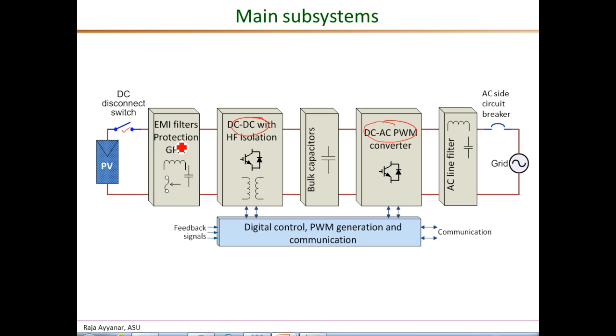That gets connected to the first stage, which is the EMI filtering and DC protection stage. The EMI filters consist of different combinations of L and C to reduce electromagnetic interference as required by standards. The protection involves fuses, reverse polarity protection, and ground fault interrupting devices.